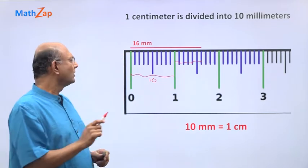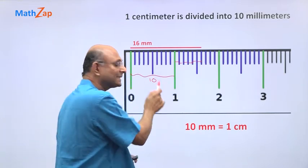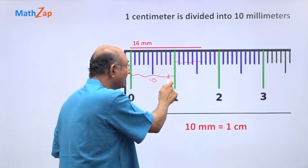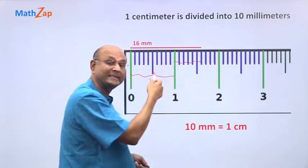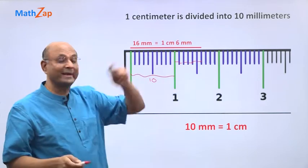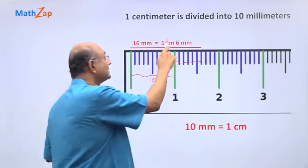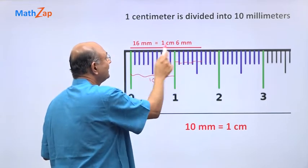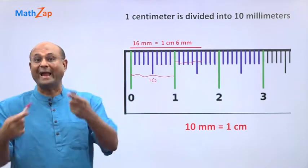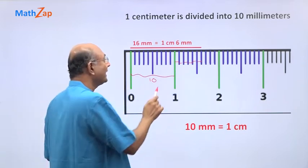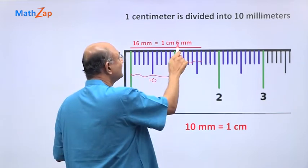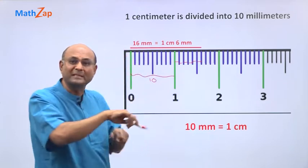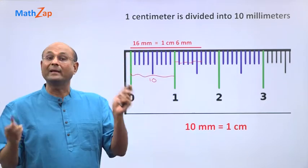Now, you could also express this using centimeters. This part is 1 centimeter, and this remaining part is 6 millimeters, so you can write it as 1 centimeter 6 millimeters — that is mixed units. So I have 16 millimeters in pure millimeters, and 1 centimeter 6 millimeters in mixed form. Can I express this in centimeters only? Yes.